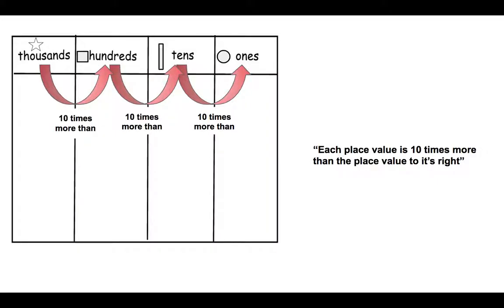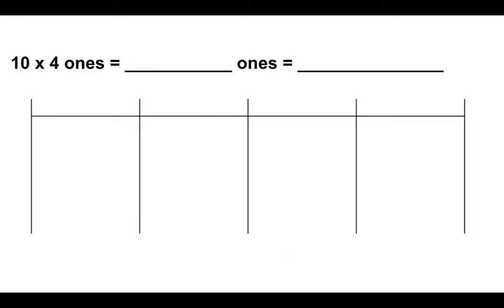Now we are going to go over how to use your knowledge that each place value is worth ten times more than the place value to its right to solve some problems. Let's say you're given a problem like this. Well the first thing you should do is label your place value chart so we know what place values we're looking at.